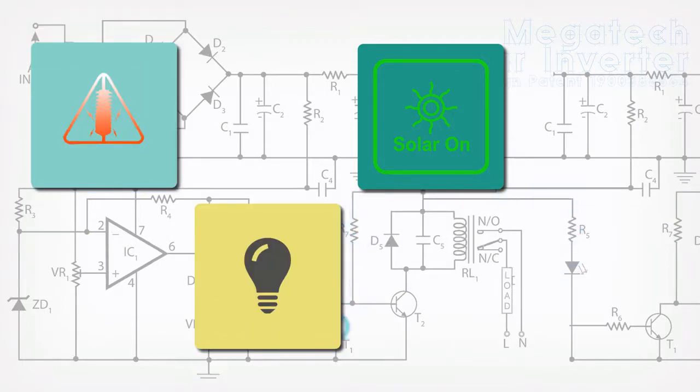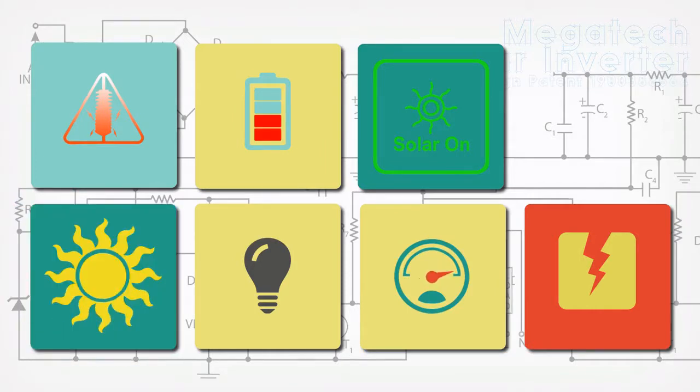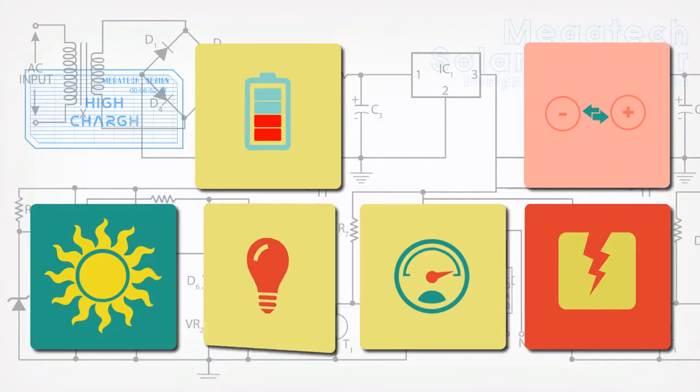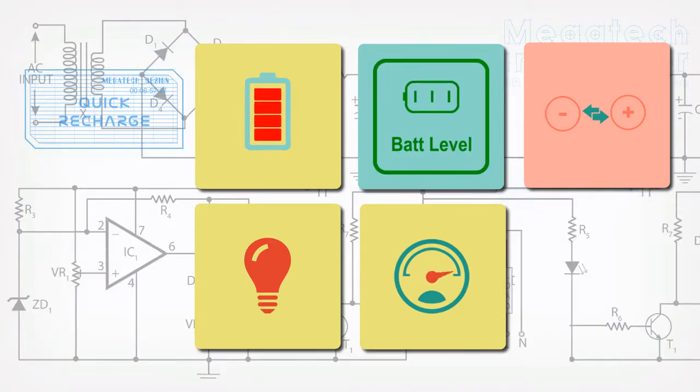Even with frequent and long power cuts, you can stop worrying. The Megatech Solar UPS comes with a high-charge mode for rapid charging, so that your batteries always remain charged, even with low power availability.